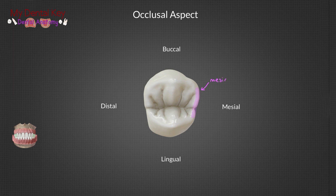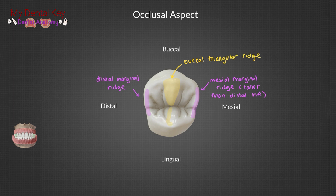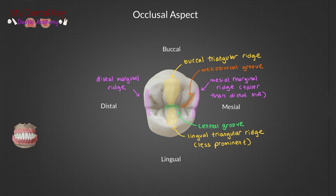On the lateral sides of this view, we can see a mesial marginal ridge and a distal marginal ridge. The mesial marginal ridge is taller than the distal marginal ridge. We can see the buccal and lingual triangular ridges in the center, with the lingual triangular ridge being less prominent than the buccal. Here is the central groove, mesial buccal groove, and distal buccal groove, along with the mesial marginal ridge developmental groove, which is an extension of the central groove. This is the only premolar that has a groove that runs over the occlusal surface to the mesial marginal ridge.